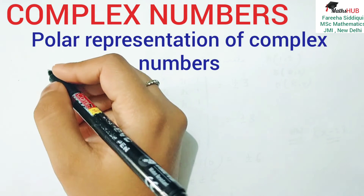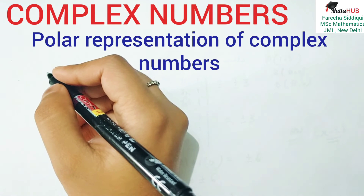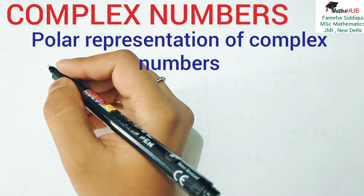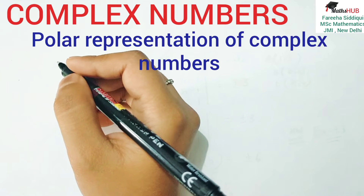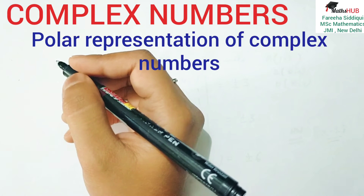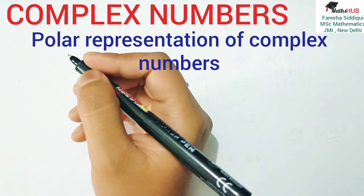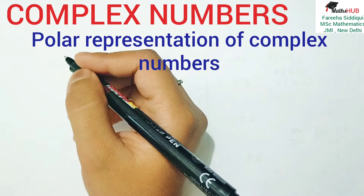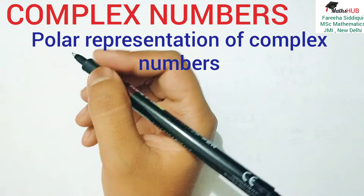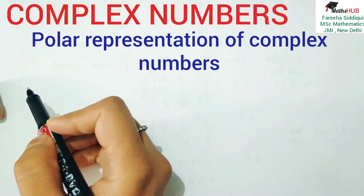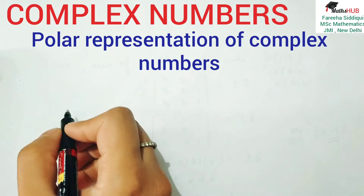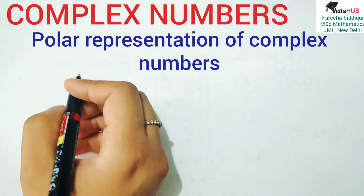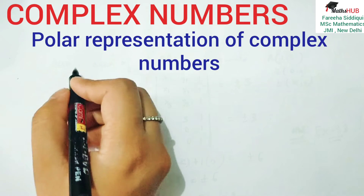How are you students? I hope you did exercise 5.1 comfortably as you didn't share any doubt in the comment section. Now it is time to start the next topic of this chapter, that is polar representation of a complex number. This topic is also very important. To find the polar form, we first need some basic knowledge, so pehle hame jaanna hai what is polar form and how we find it. For polar form, we first need basic knowledge of the Argand plane or complex plane, and then we will find the polar form.